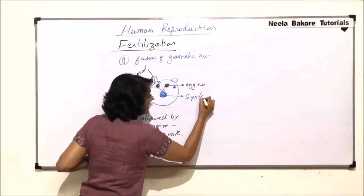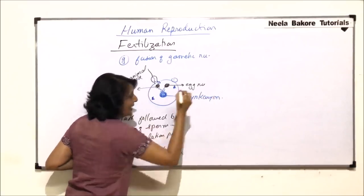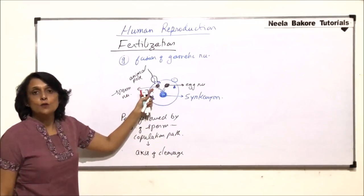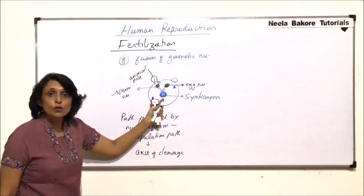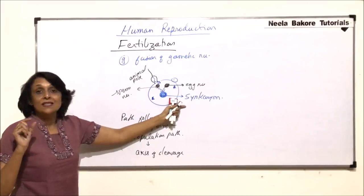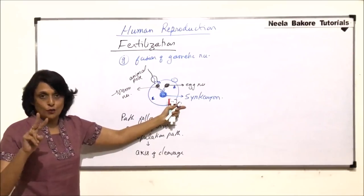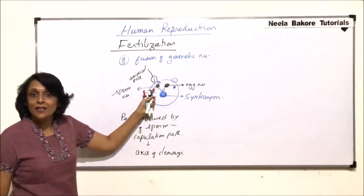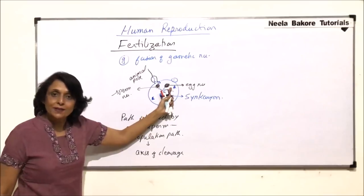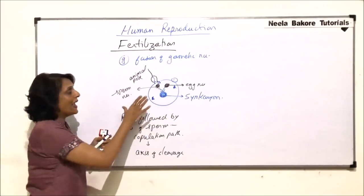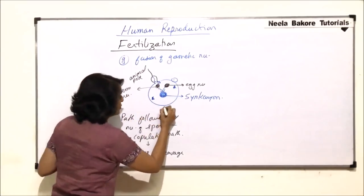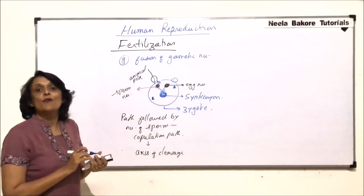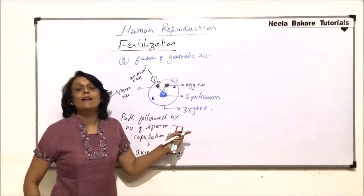This is called syncarion. Syncarion means when the nucleus of the sperm and the egg have fused and the nucleus, the new nucleus which is formed has two sets of chromosomes - one which has received from the paternal gamete and the other which is in the maternal gamete, that is in the egg. And now this structure is known as the zygote and now the process of fertilization is said to be completed.